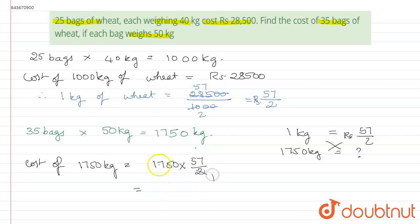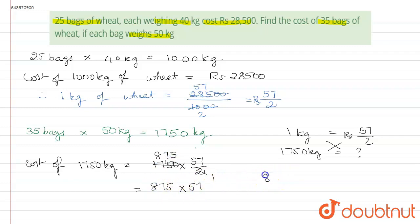We simplify: 1,750 ÷ 2 = 875, so the expression becomes 875 × 57. We now multiply 875 × 57 to get the final answer.